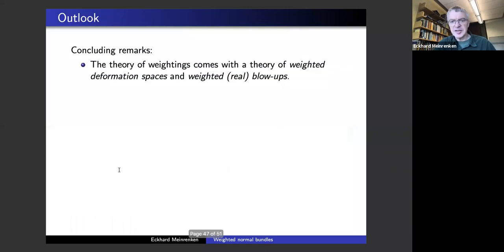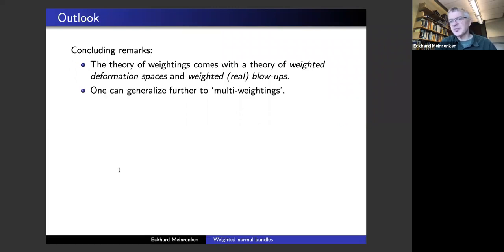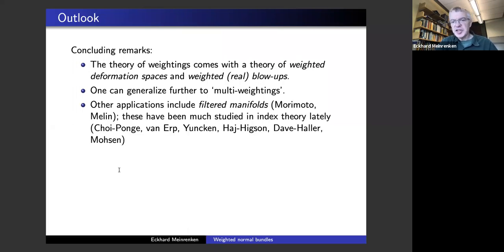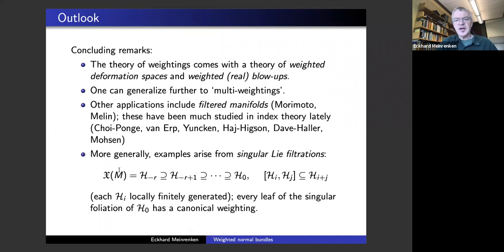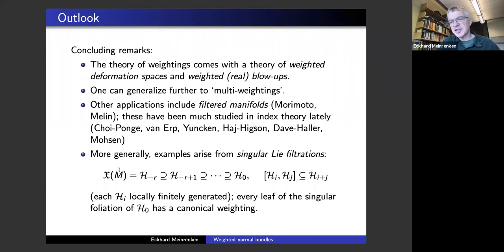I think I'm just out of time. Some concluding remarks: there's a whole story also with weighted deformation spaces, weighted blow-ups, and so on. One can introduce more weightings and multi-filtrations. There are other applications to so-called filtered manifolds, which have been very much studied lately in index theory — and this was actually one of my main motivations for developing this theory in the first place. And there are many more examples for this weighted story which come from singular leaf filtrations — filtrations of the Lie algebra of vector fields compatible with the bracket. If you have such a leaf filtration, the degree zero part gives a singular foliation, and every leaf of that singular foliation has a canonical weighting, so our story applies there. Thank you very much.